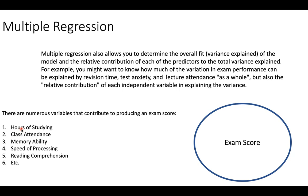But we know that exam score is a complex outcome that is going to have numerous inputs. It's going to have numerous things that go into predicting it. So I want to include hours of studying, class attendance, your memory ability, your speed of processing, and your reading comprehension ability. We have two variables — studying and attendance — that are about your behavior, and three variables — memory, speed of processing, and reading comprehension — that are about your cognitive abilities. Together, these five variables give us a good chance at predicting a lot of exam score.